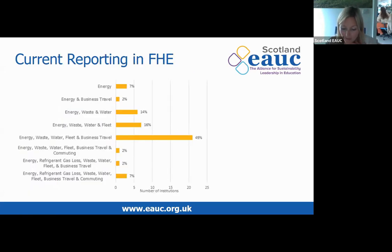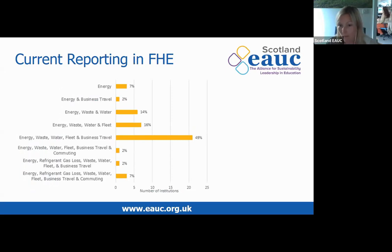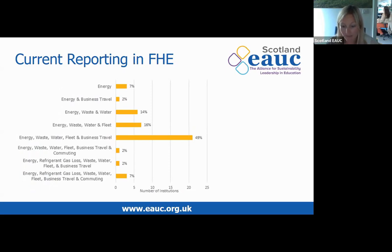It's best practice to report all scope 1 and 2 emissions and relevant scope 3 emissions where possible. SSN also requests that emissions are allocated to the correct scope in your PropX submission. The new SSN guidance for 2018-19 states that all institutions should report building energy, fleet, waste, water, and business travel as a minimum. EAUC Scotland recommends that F gases and commuting are also included.